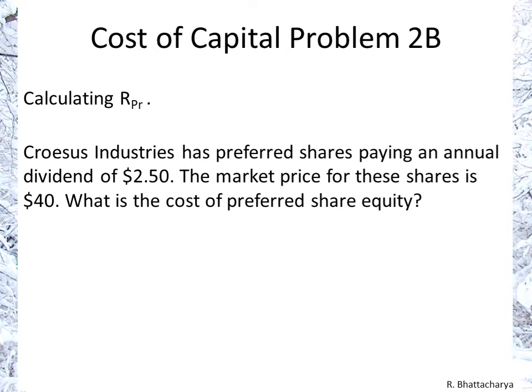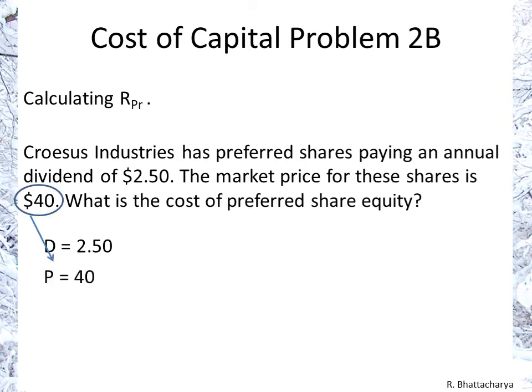We just need to start labeling and we can go straight at it. $2.50 is the dividend. You'll notice I didn't put a subscript here because it is a constant dividend — it doesn't change, grow, or shrink. It's a perpetuity, and the price is $40. That's P.